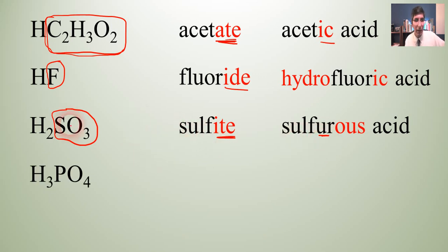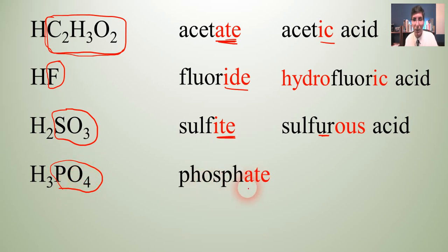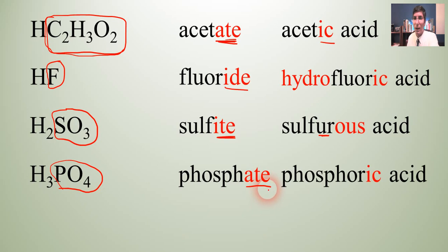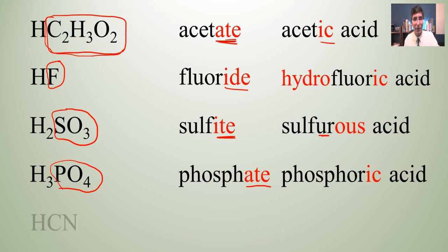H3PO4 — speaking of that, we have PO4, which is called phosphate. We drop the '-ate' and replace it with '-ic'. Is it phosphic? Well, we just said for phosphorus acids we add a little extra syllable, so it becomes phosphoric acid. Phosphoric acid is a fairly strong acid — it's actually found in Coca-Cola, so if you look at the ingredients, you'll find phosphoric acid listed there.